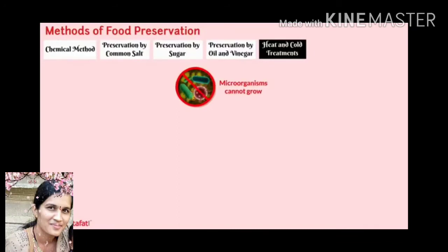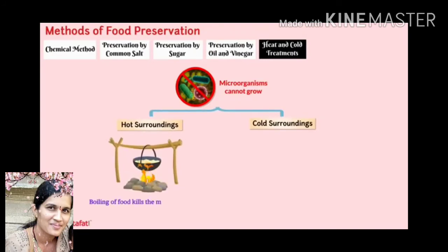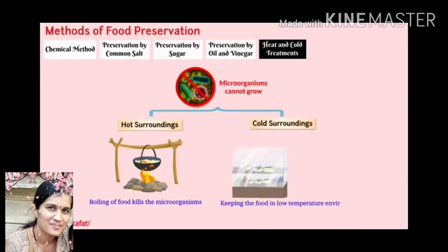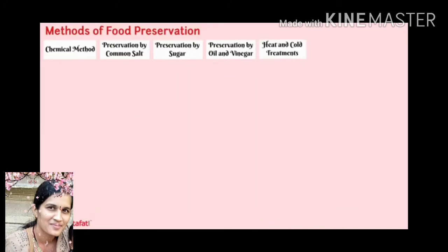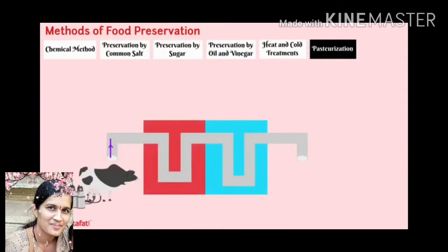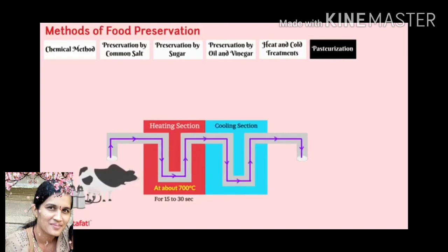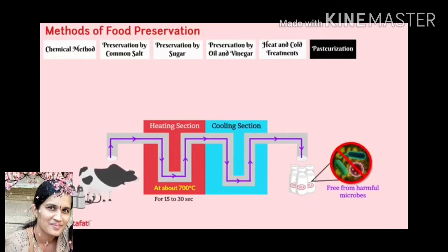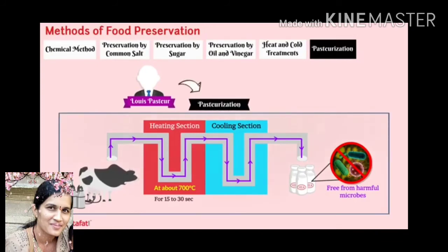Heat and cold treatments: microorganisms cannot grow in very hot or very cold surroundings. Boiling of food kills microorganisms, and refrigeration of food items at low temperature also kills microorganisms or prevents their growth. Pasteurization: cow's milk is heated at about 70 degrees Celsius for 15 to 30 minutes and then chilled suddenly, and preserved in a bottle free from harmful microorganisms. This method was first developed by Louis Pasteur, hence it is called pasteurization.